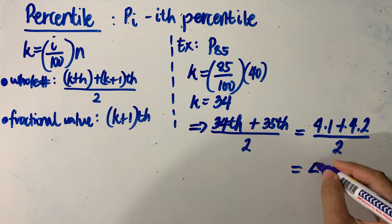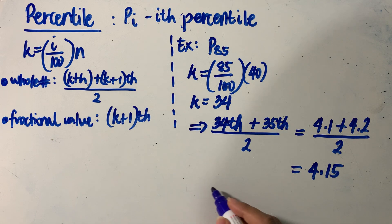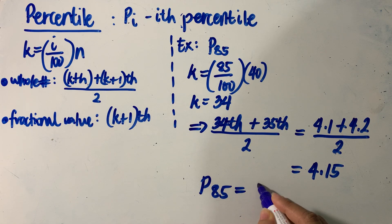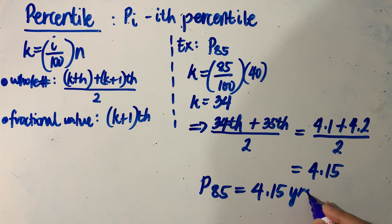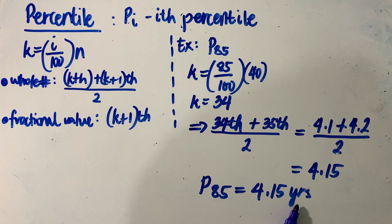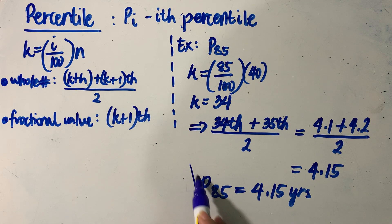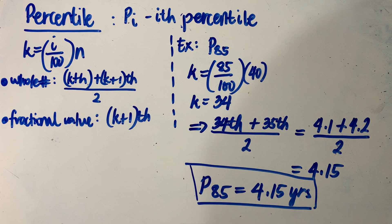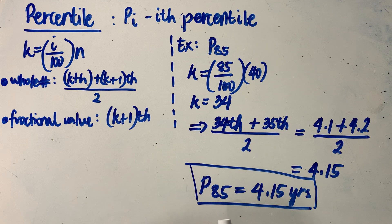Adding them and dividing by 2, the corresponding value is equal to 4.15. That means our 85th percentile is equal to 4.15 years — years, because going back to the context of our distribution, this involves the lives of the 40 car batteries expressed in terms of years. What is important is how we interpret this corresponding 85th percentile.